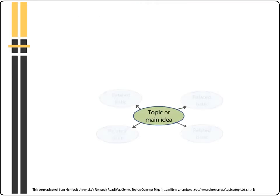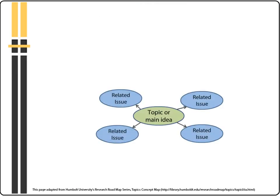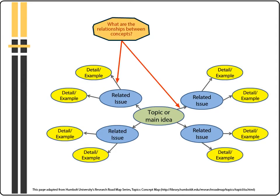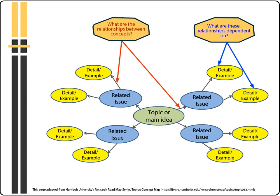Research is a creative process involving both analysis, in which you take things apart, and synthesis, in which you put things together. Creating a concept map is a visual way of analyzing your topic, and after it is completed it will help you to both synthesize a research question and give you the search terms to pursue it.